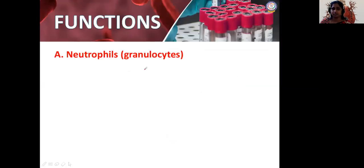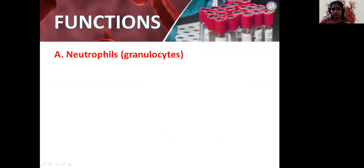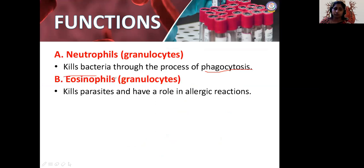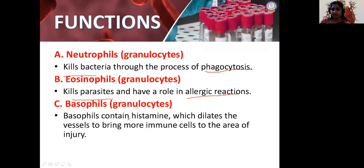Regarding functions of WBC: neutrophils kill bacteria through a process called phagocytosis — the cell-eating process. Eosinophils kill parasites and are involved in allergic reactions. Basophils contain histamine — a substance which dilates vessels so that more immune cells reach an area of injury. In a cut, more histamine secretion occurs. All these WBC types share a basic killing nature — destroying foreign substances like bacteria and viruses.